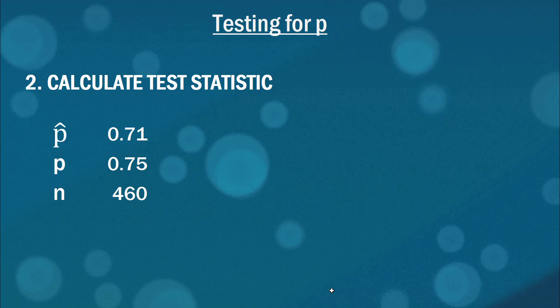The next step then is to calculate our test statistic. We've got three important pieces of information we can grab from the question. P hat, which is our sample proportion, was 0.71. P, the population proportion, is 0.75. And N is 460, that's the number of observations we have.